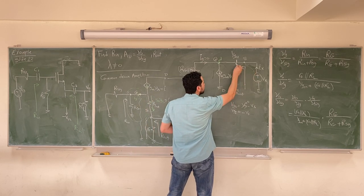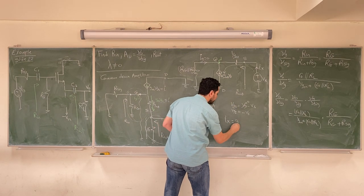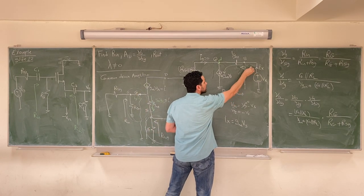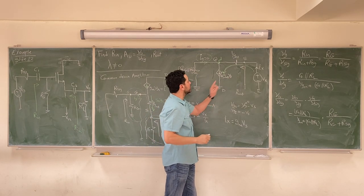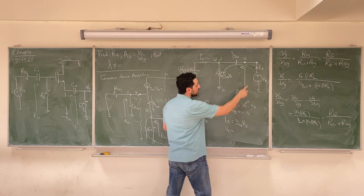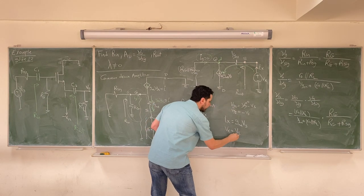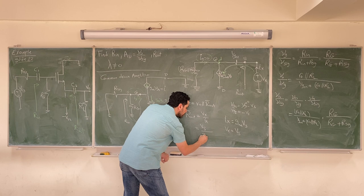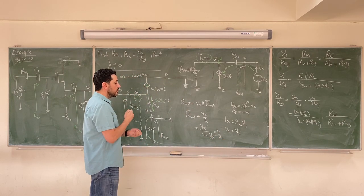Since the gate current is zero, IX equals the current through the dependent source, which is GM·VS. Also, VX equals VS because VX is connected to the source node and the reference is ground. So VX/IX = VS / (GM·VS) = 1/GM. Therefore R_out_bar equals 1/GM.